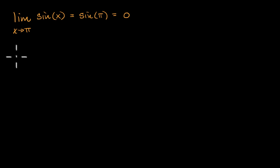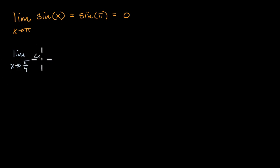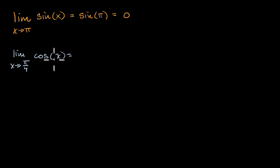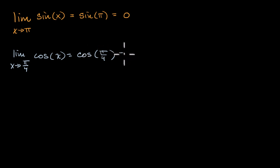We could do a similar exercise with cosine of x. What's the limit as x approaches pi over four of cosine of x? Well, cosine of x is defined for all real numbers and it's also continuous. So this limit is just going to be cosine of pi over four, which is equal to square root of two over two. This is one of those useful angles to know — in degrees, this is a 45 degree angle.